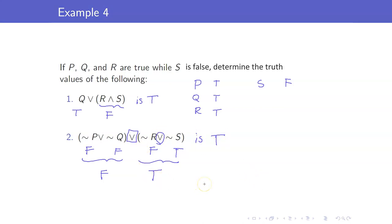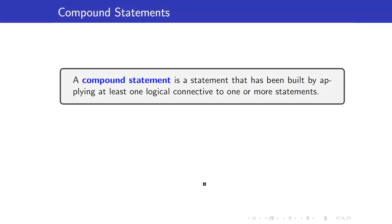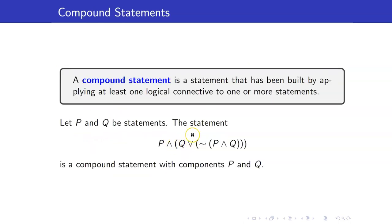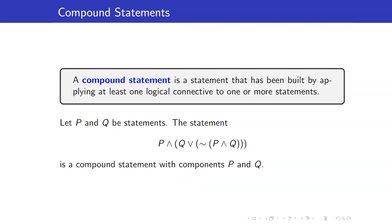In this example we are actually discussing compound statements. Compound statements are statements that have been built by applying at least one logical connective to one or more statements. In our previous examples, we combined Q, R, and S using the logical connectives 'or' and 'and.' For example, let P and Q be statements — the statement 'P and Q' or 'the negation of P and Q' is a compound statement with components P and Q. If we make a truth table for this statement, it will have 2 raised to 2 rows.